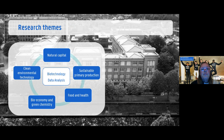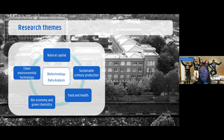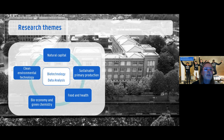To finalize the faculty section, our research teams cover a broad circle starting with Natural Capital and Sustainable Primary Production — the faculty's original roots in agriculture. This extends to Food and Health, then Bioeconomy and Green Chemistry, and Clean Environmental Technology, returning back to Natural Capital. At the center, all domains are supported by Biotechnology Research and Data Analysis.